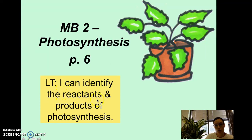So today, you are going to be able to identify the reactants and products of photosynthesis. Remember that in chemistry, we studied that chemical reactions have reactants, things that go into the reaction, and then we have products, things that come out of the reaction. So this is a chemical reaction that's happening.